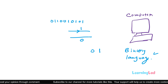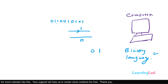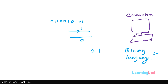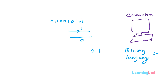Since binary language is easy to create at the hardware level, the computer is built to recognize patterns of 0s and 1s. For a specific pattern of 0s and 1s, a specific set of operations is defined. So when the computer sees a specific pattern it knows what to do. This binary language that the computer understands is also called machine language.